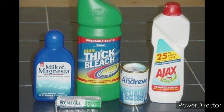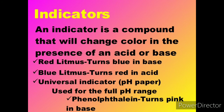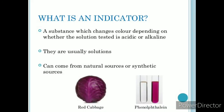To test whether a given substance is acidic or basic, special substances are used, and we call them indicators. Indicators which we use to identify acid or base are called acid-base indicators. The definition is: a substance that changes its color when added to an acid or a base is called an acid-base indicator, or simply an indicator.